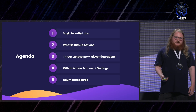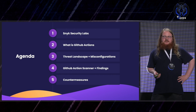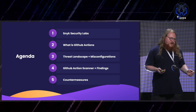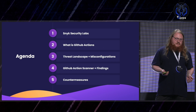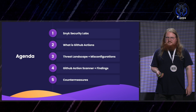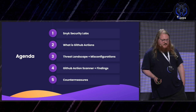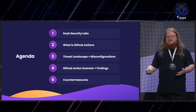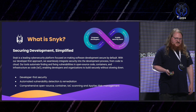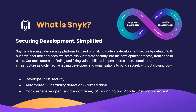Today we'll very briefly introduce Snyk and Snyk Security Labs, then go over what GitHub Actions are, look at the threat landscape, some misconfigurations and vulnerabilities, followed by findings and the GitHub Action Vulnerability Scanner we wrote. We'll also look at countermeasures so security engineering teams and developers can avoid these mistakes. Snyk is a software security company focused on building tools that allow companies to stay secure while developing — including SAST, SCA, container scanning, IaC, and general AppSec tooling.